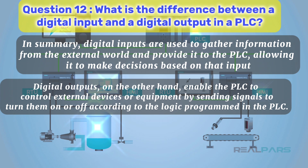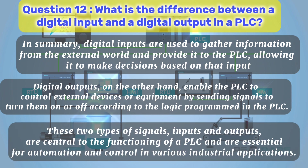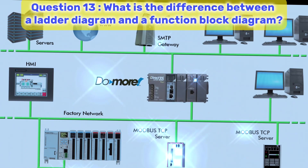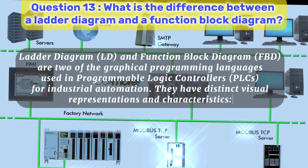In summary, digital inputs are used to gather information from the external world and provide it to the PLC, allowing it to make decisions based on that input. Digital outputs enable the PLC to control external devices or equipment by sending signals to turn them on or off according to the logic programmed in the PLC. These two types of signals, inputs and outputs, are central to the functioning of a PLC and are essential for automation and control in various industrial applications. Question 13. What is the difference between a ladder diagram and a function block diagram? Ladder diagram, LD, and function block diagram, FBD, are two of the graphical programming languages used in programmable logic controllers, PLCs, for industrial automation.